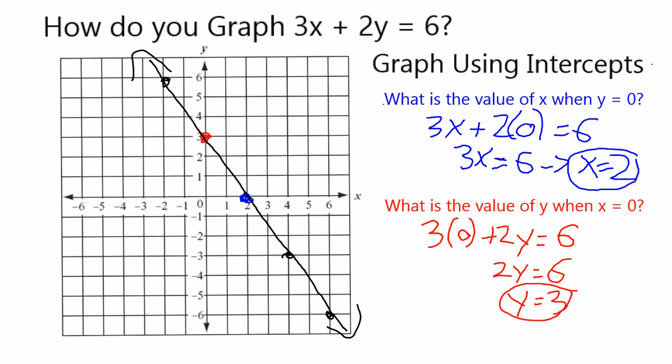Again, it's in standard form for a linear equation, so I know the equation is going to be a straight line. I can graph using its intercepts by finding one value when the other is equal to 0. That's going to give me my two points, and based on those two points, I can draw a straight line through them, connecting the graph.